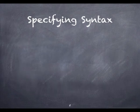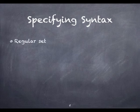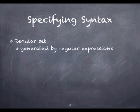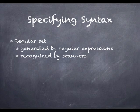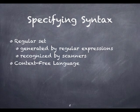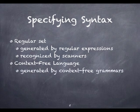Any set of strings that can be defined in terms of concatenation, alternation, and clean closure is called a regular set, or sometimes a regular language. Regular sets are generated by regular expressions and recognized by scanners. Any set of strings that can be defined if we add recursion is called a context-free language. Context-free languages are generated by context-free grammars and recognized by parsers.